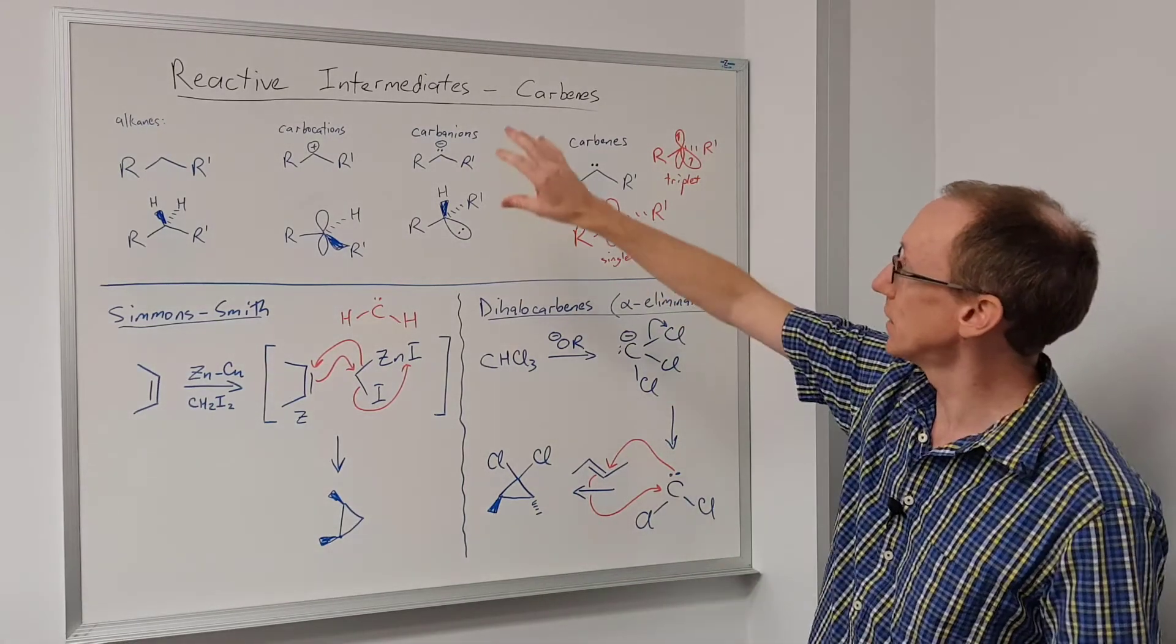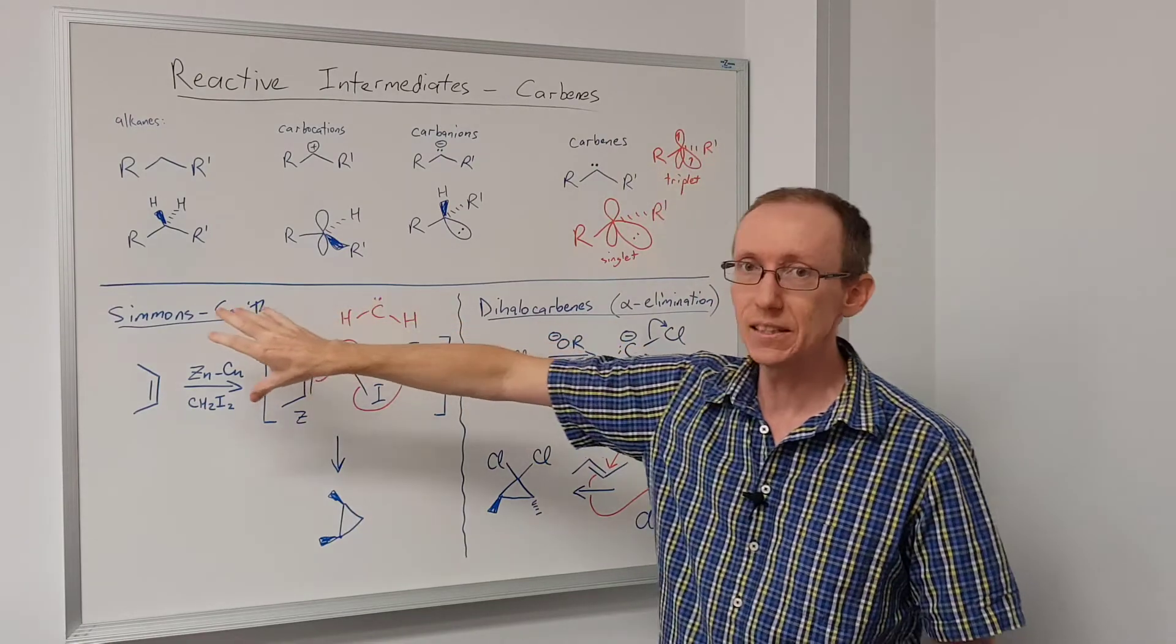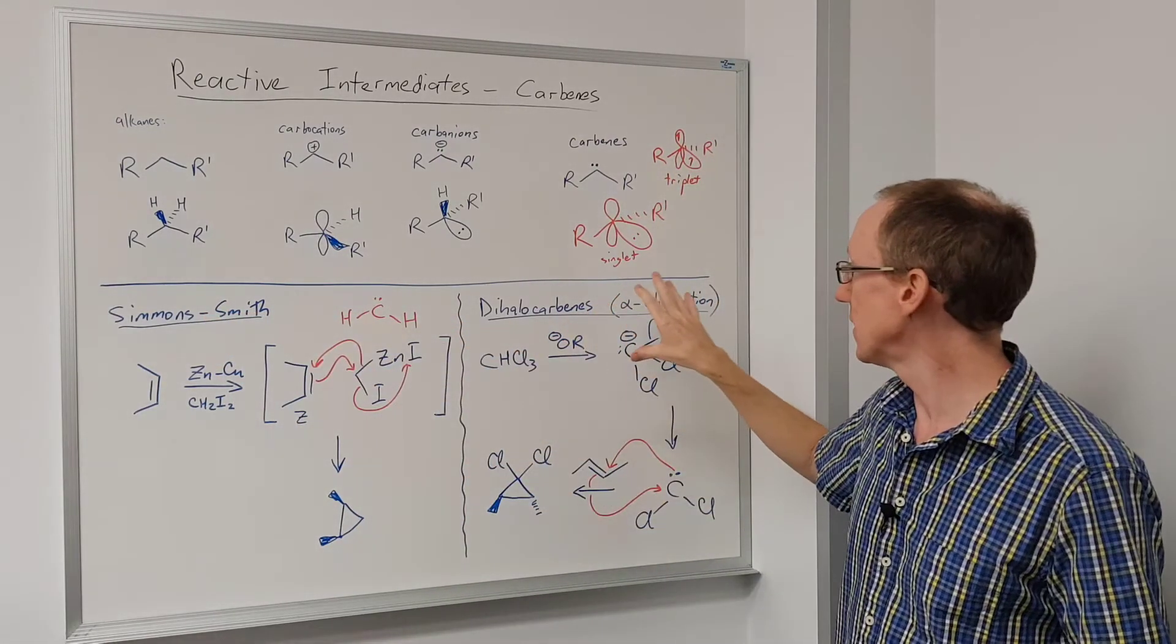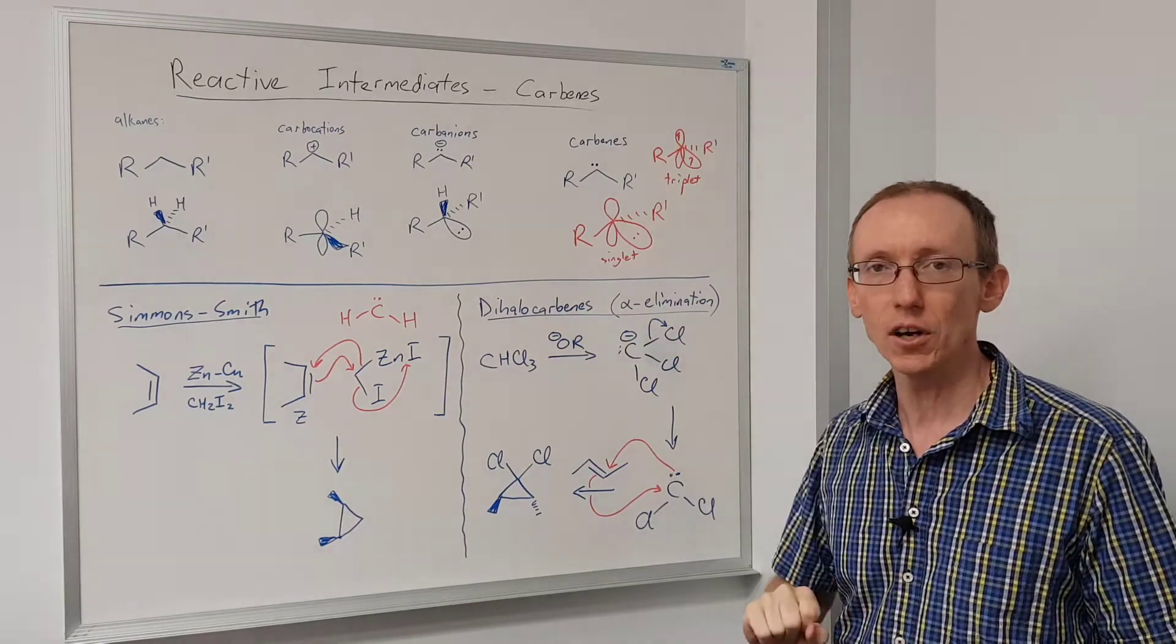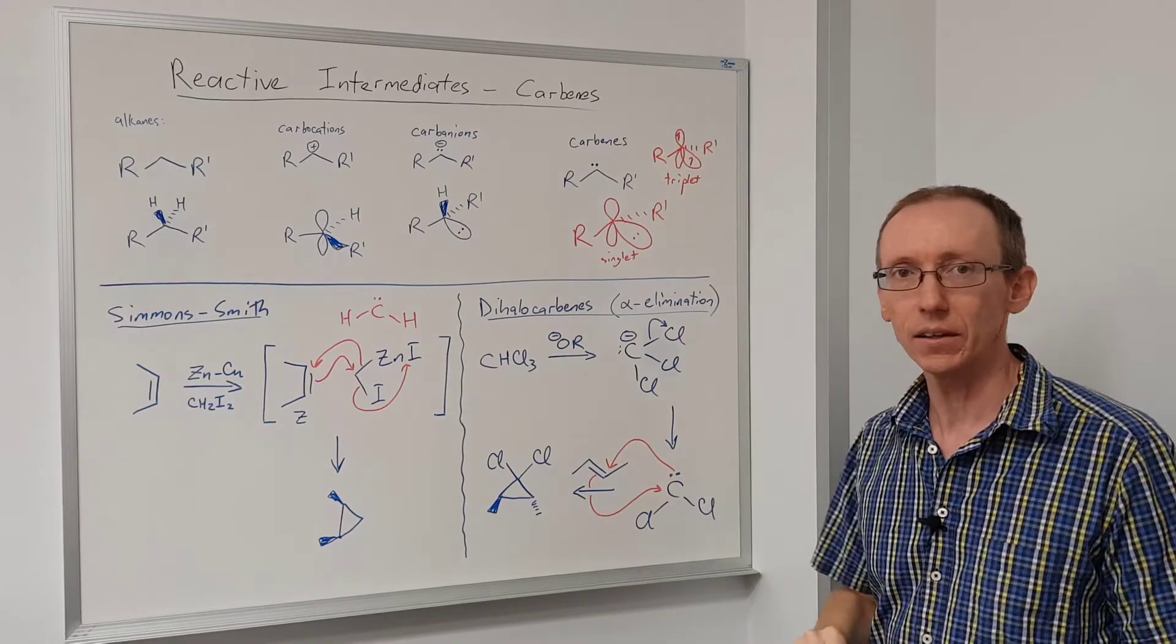So that summarizes some of the key features of carbenes, their structure and the reactivity in the Simmons-Smith reaction, and in the alpha elimination to generate dihalocarbenes, which normally undergo cyclopropanation with alkenes.